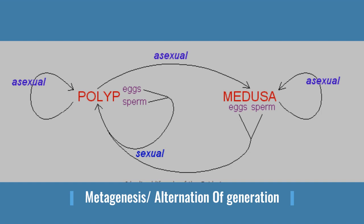You need to understand what metagenesis is and why it is called alternation of generation. It is called alternation of generation because in one phase it is the asexual phase — polyp produces medusa asexually — and in another phase it is the sexual phase — medusa reproduces sexually to produce polyp. So the generation keeps alternating between sexual and asexual phases.